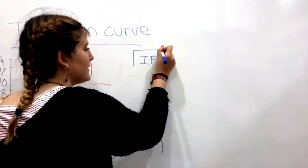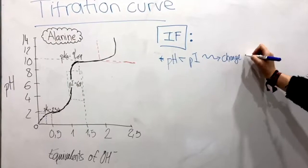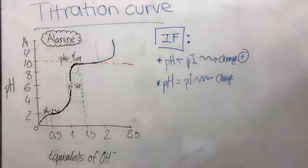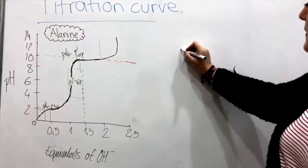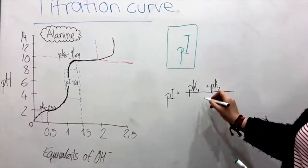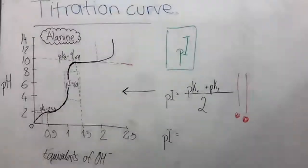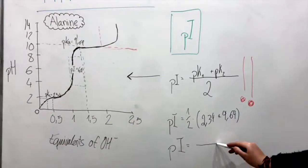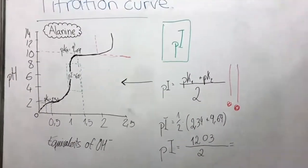Now we are going to talk about the isoelectric point. If the pH is less than the isoelectric point, the charge is positive. If the pH equals the isoelectric point, the charge is 0. If the pH is greater than the isoelectric point, the charge is negative. There is a formula for calculating the isoelectric point: pKa1 plus pKa2 divided by 2. If we have three pKa values, we choose the two closest to each other. In this case, the isoelectric point is 6.015.